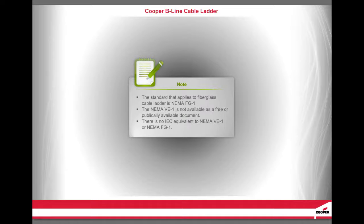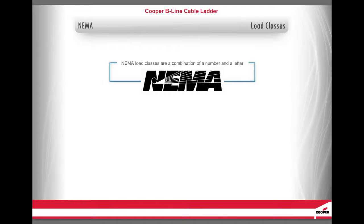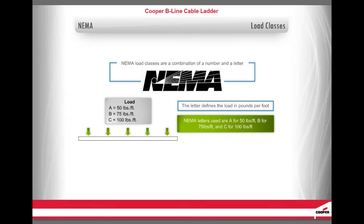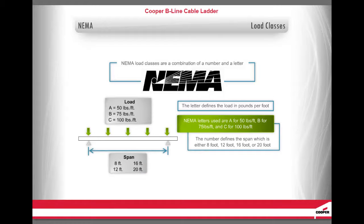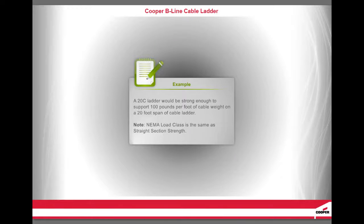The NEMA VE1 is not available as a free or publicly available document. There is no IEC equivalent to NEMA VE1 or NEMA FG-1. NEMA load classes are a combination of a number and a letter. The letter defines the load in pounds per foot: A for 50 pounds per foot, B for 75 pounds per foot, and C for 100 pounds per foot. The number defines the span — either 8-foot, 12-foot, 16-foot, or 20-foot. A 20C ladder would be strong enough to support 100 pounds per foot of cable weight on a 20-foot span of cable ladder.